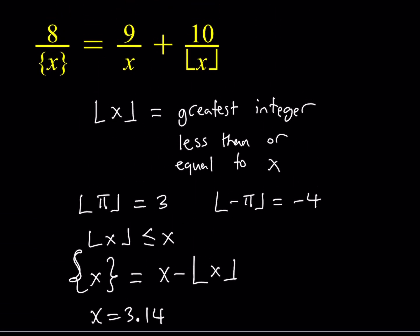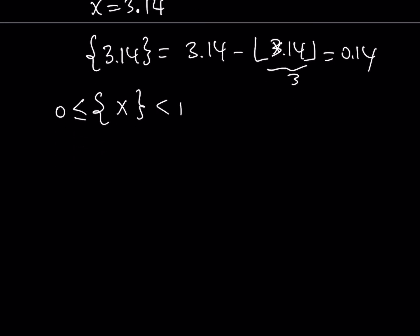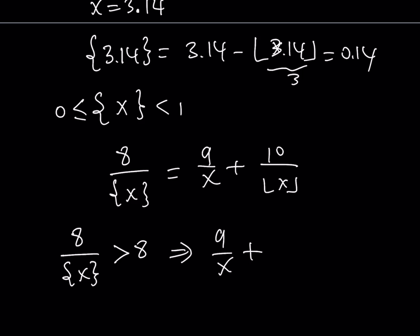Now let's look at our equation. One significant property is that if x is an integer, the fractional part is 0. So the fractional part is always a value between 0 and 1, where 0 is inclusive. In our equation — 8 divided by the fractional part of x equals 9 over x plus 10 over the floor value of x — since the fractional part is less than 1, dividing 8 by it gives something greater than 8. So the right-hand side must also be greater than 8.